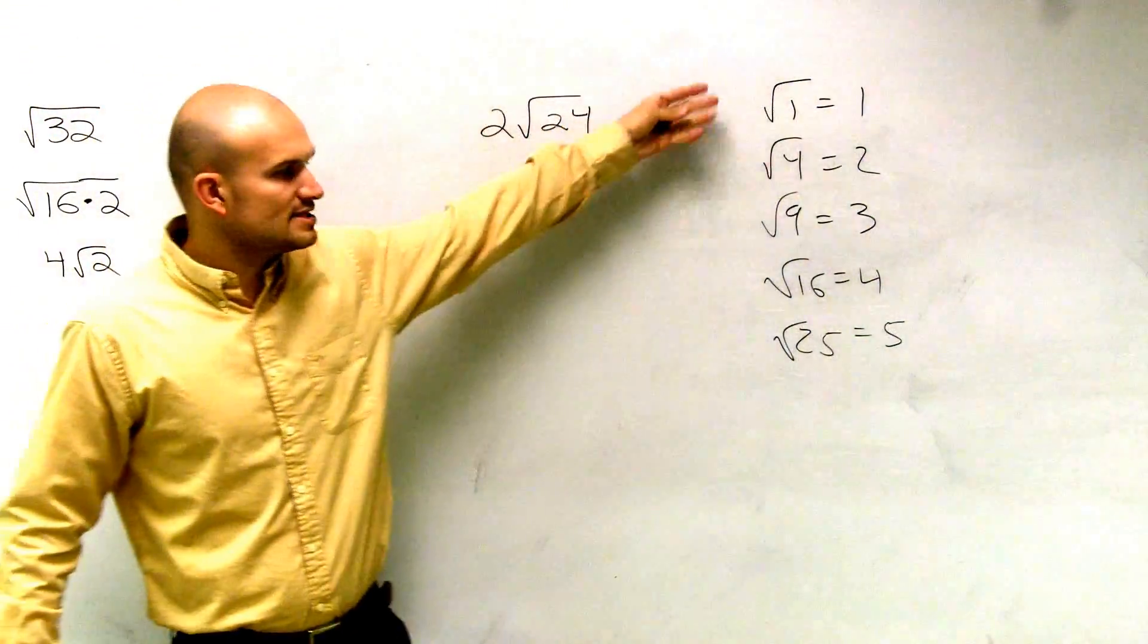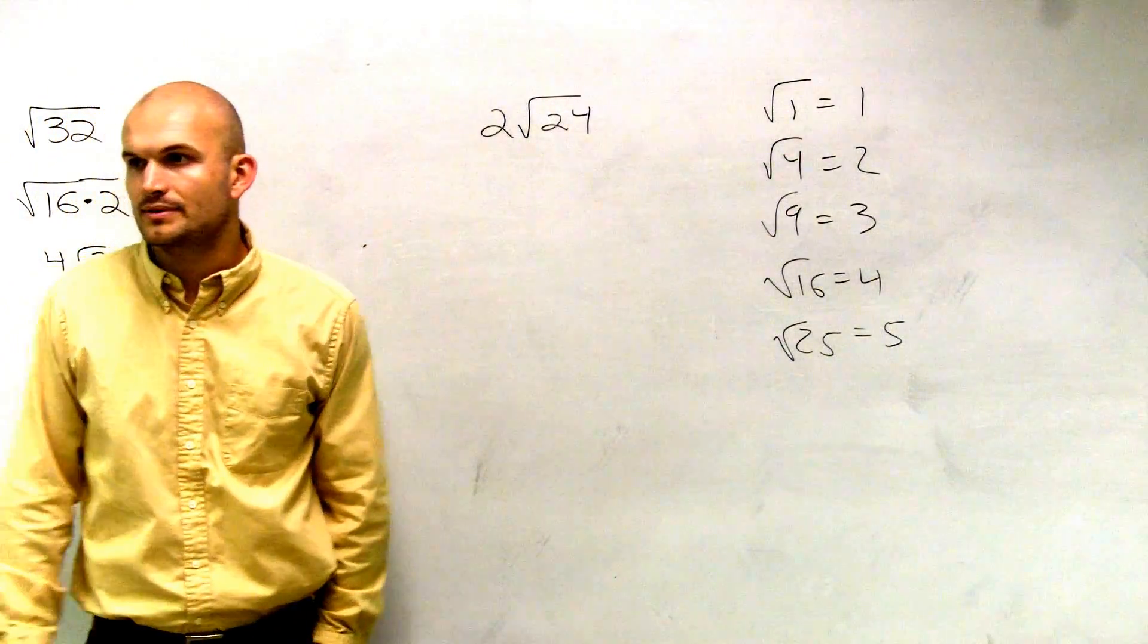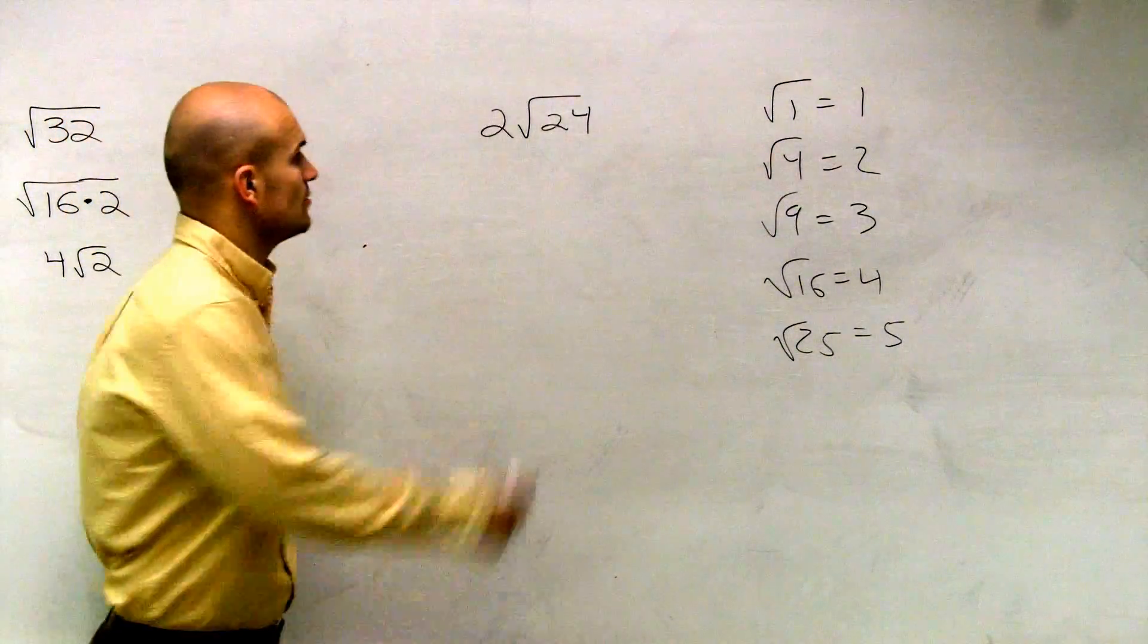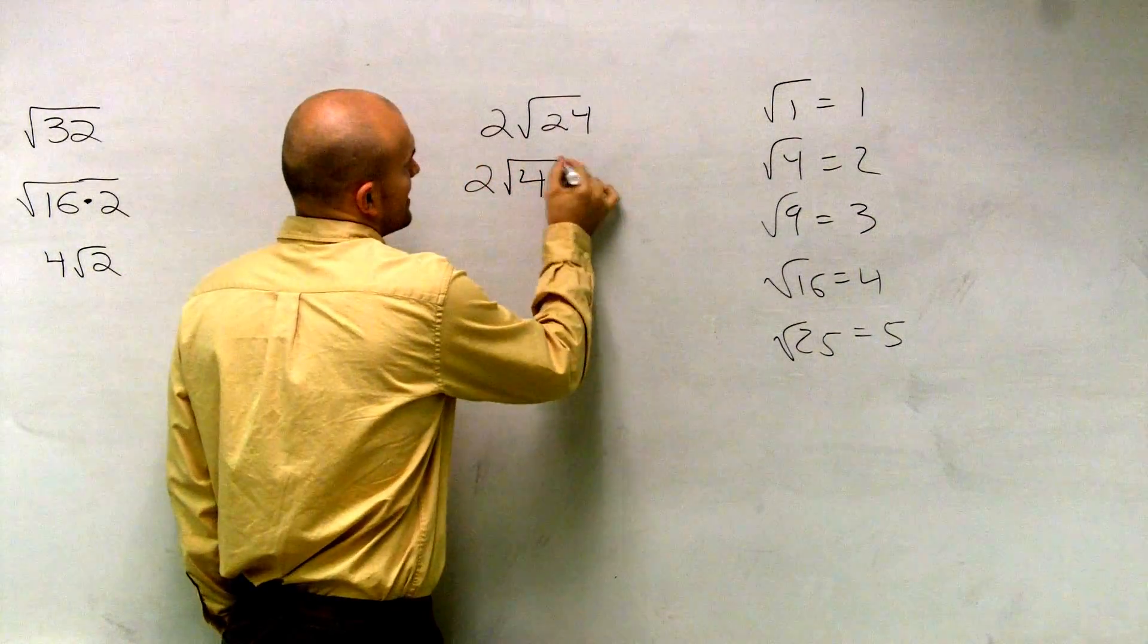What I want you to do is say what is the largest square number that I can divide into 24? 4, right? So what I'm saying is I could rewrite this as 2 times the square root of 4 times 6.